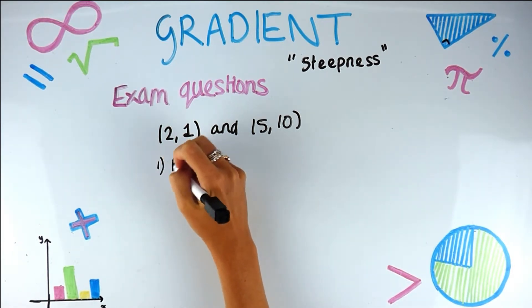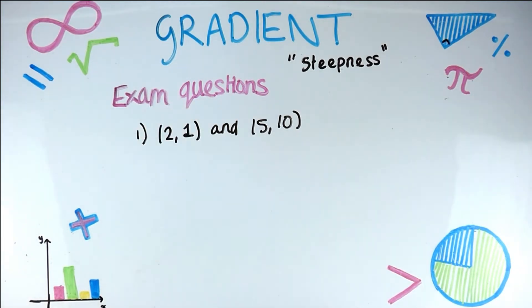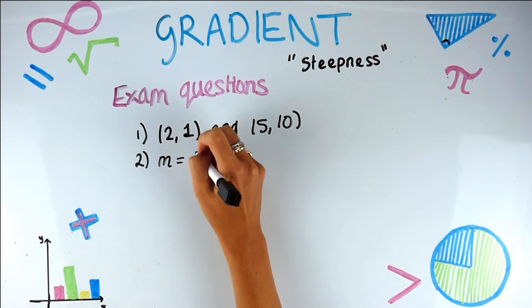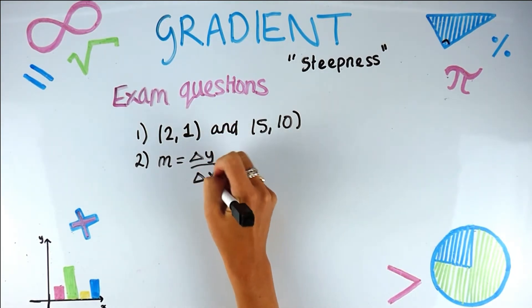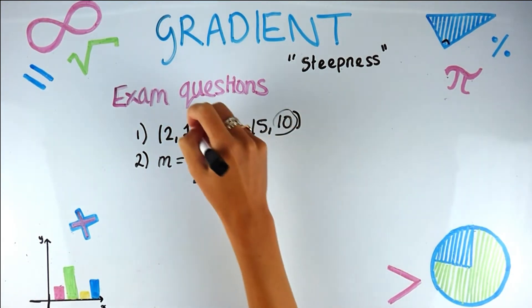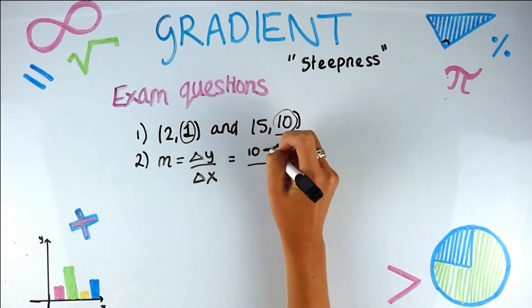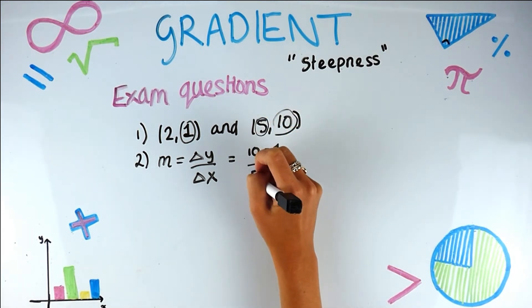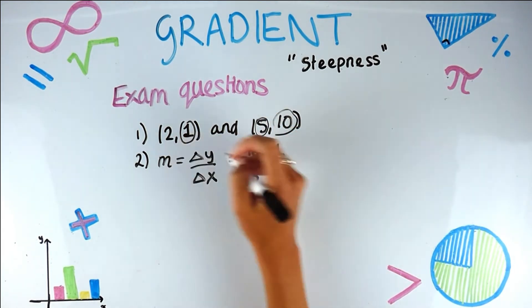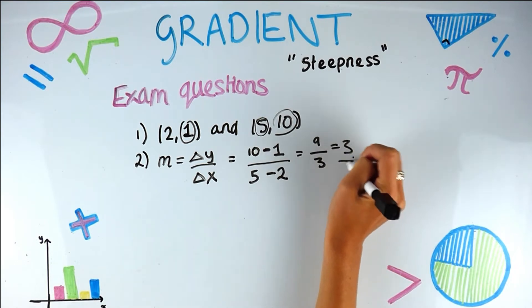Step one — pick two points — is already done for us by the question. Step two — use the equation: change in y over change in x. Change in y: we've gone from y to 1, and change in x is 5 minus 2. So we get nine divided by three, which equals three. That's your gradient.